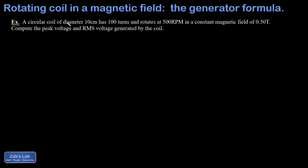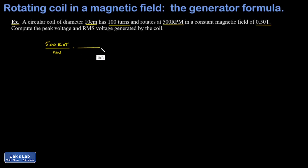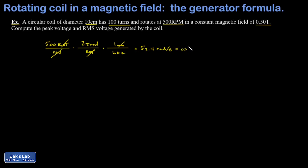In the example, we have a circular coil of diameter 10 centimeters — not radius — with 100 turns, rotating at 500 rotations per minute (RPM) in a constant magnetic field of 0.5 tesla. We need to convert the rotation rate to radians per second: 500 rotations per minute times 2π radians per rotation times 1 minute per 60 seconds. The only surviving units are radians per second, giving ω = 52.4 radians per second.